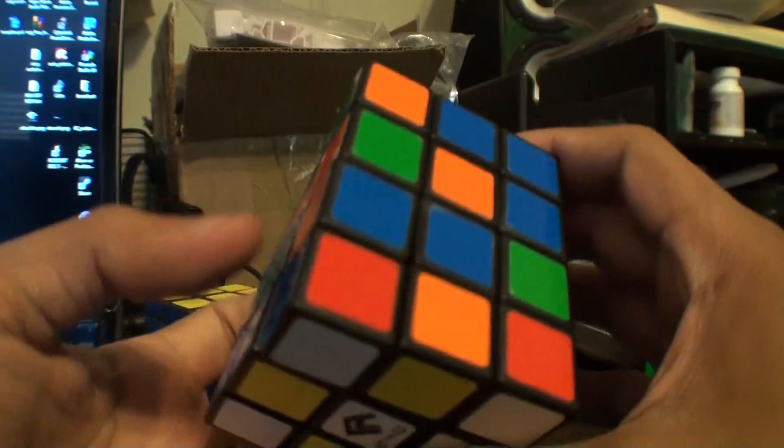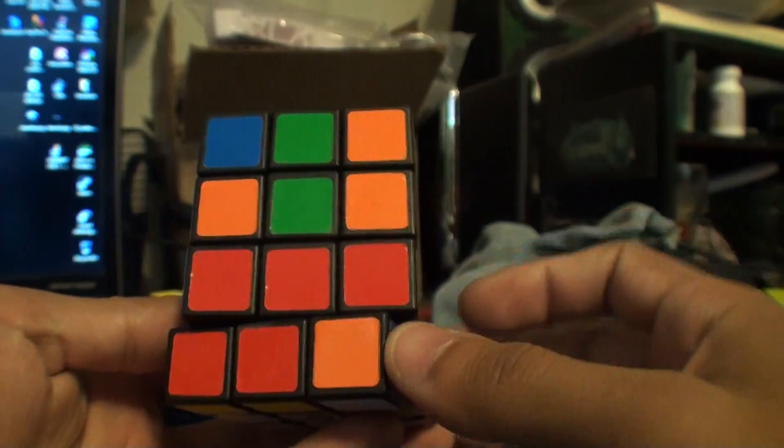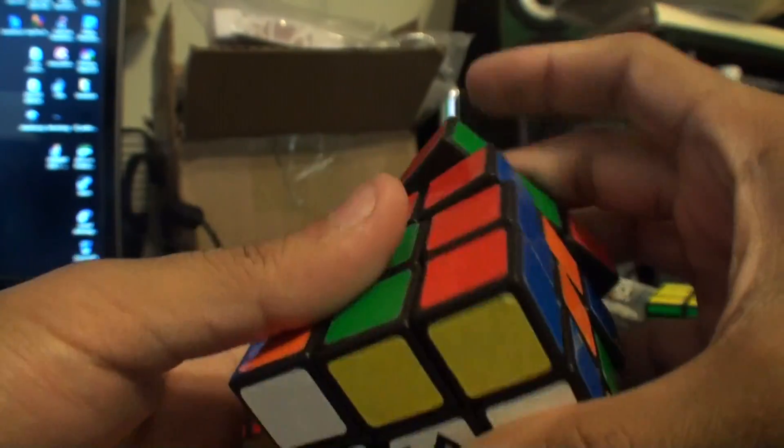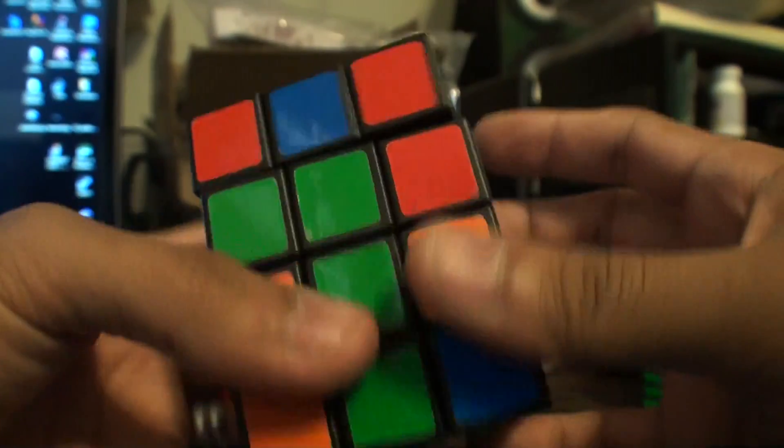Alright, so to solve this, you're going to want to get the cross on the bottom first. So here we have, let me scramble it for you and let me get this all the way scrambled.